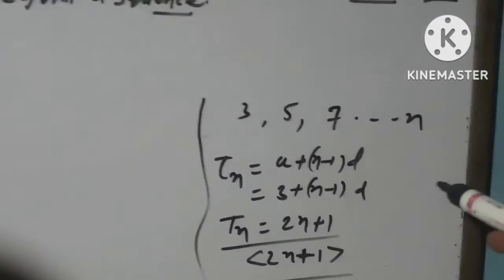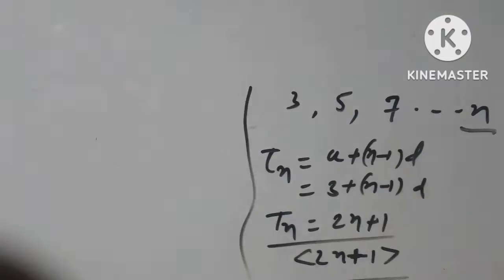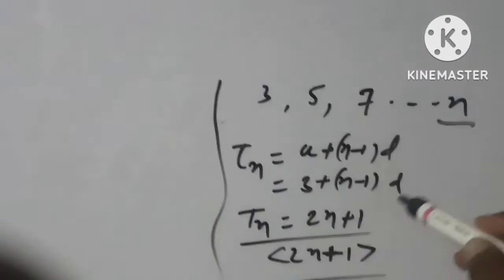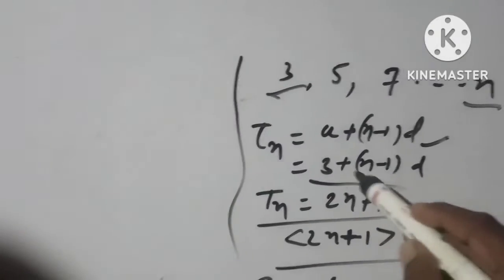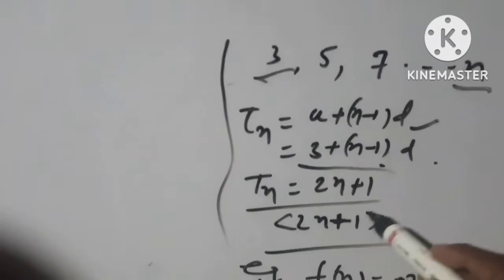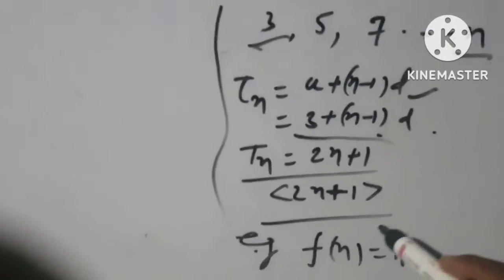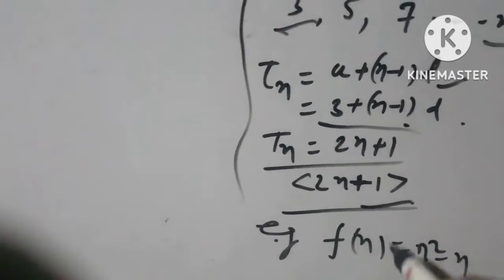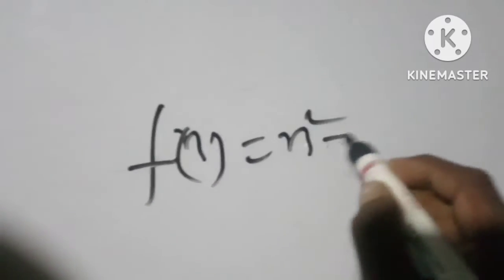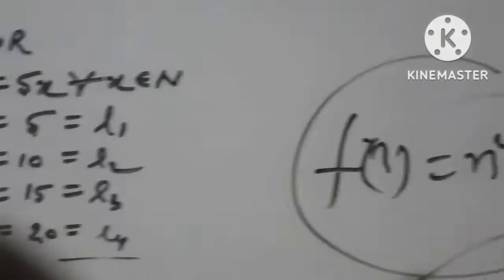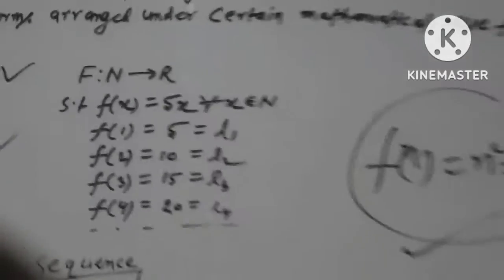Example 3, 5, 7 dot dot natural numbers, so Tn or An formula a plus n minus 1 into d. So formula is set, n to n minus 1 into d, so Tn equals 2n plus 1. Natural numbers to real numbers using this formula. F(n) equal to n square, this term is explained here.